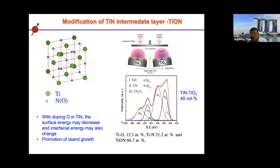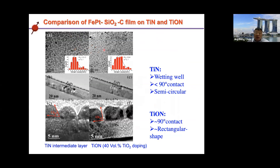To further reduce surface energy, we can dope oxygen into TiN to form titanium oxynitride (TiON). Doping oxygen increases the ionic bonding and reduces the metallic bonding. We co-sputter titanium nitride and titanium oxide, and find that at 60% titanium oxynitride, the microstructure becomes much better — the contact angle approaches 90° and becomes more rectangular. We can still get good in-plane hysteresis loops after using this intermediate layer.